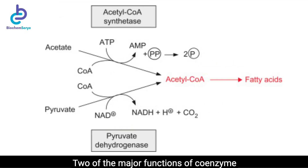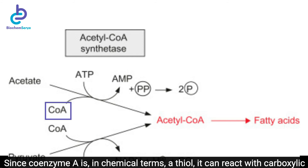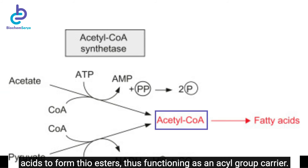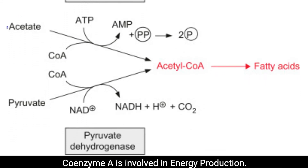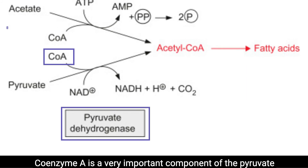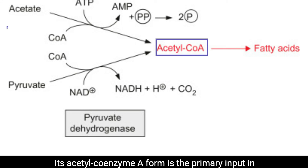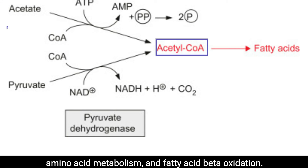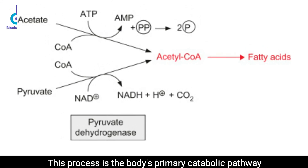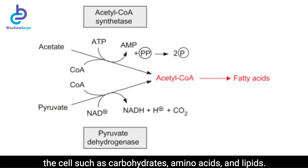Two of the major functions of coenzyme A are summarized in this illustration. Coenzyme A is involved in regulation of lipid metabolism. Since coenzyme A is, in chemical terms, a thiol, it can react with carboxylic acids to form thioesters, thus functioning as an acyl group carrier. A molecule of coenzyme A carrying an acyl group is also referred to as acyl-CoA. Coenzyme A is also involved in energy production. It is a very important component of the pyruvate dehydrogenase complex and some reactions in the citric acid cycle. Its acetyl-CoA form is the primary input in the citric acid cycle, obtained from glycolysis, amino acid metabolism, and fatty acid beta-oxidation.